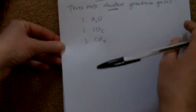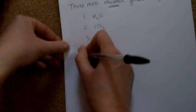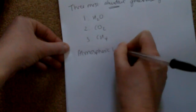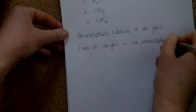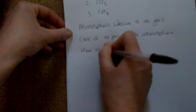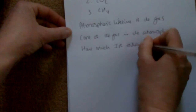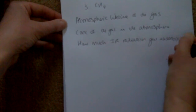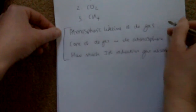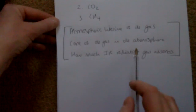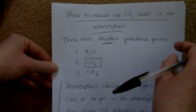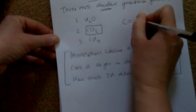When we think about how potent or strong a greenhouse gas is, we need to consider three things: the atmospheric lifetime of the gas, the concentration of the gas in the atmosphere, and how much infrared radiation is absorbed by the gas. The gas we're most concerned about is carbon dioxide, and that's why we need to look into how to reduce carbon dioxide levels. Remember, it is the bonds that absorb the infrared radiation.